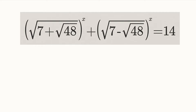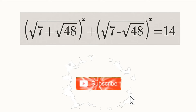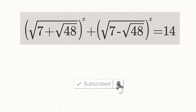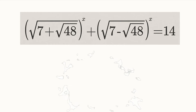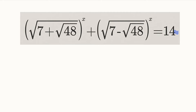Hello, good morning viewers. Let us find a solution to this interesting exponential as well as radical equation. We are given that the square root of 7 plus square root of 48, all to the power of x, plus square root of 7 minus square root of 48, all to the power of x, is equal to 14. We want to find the values of x that will satisfy this equation.